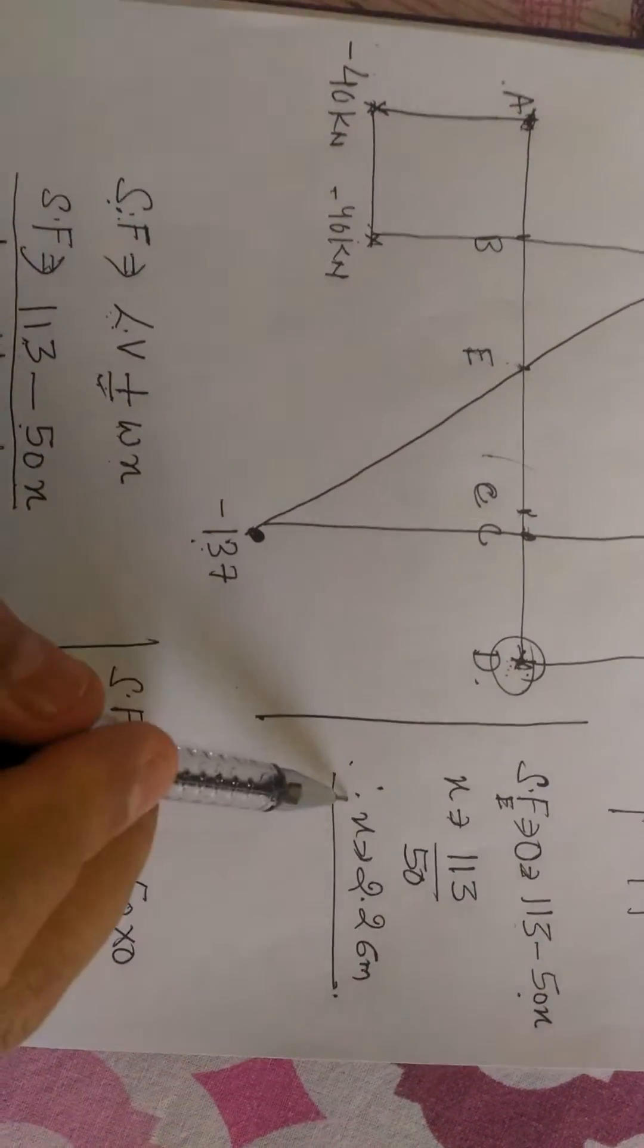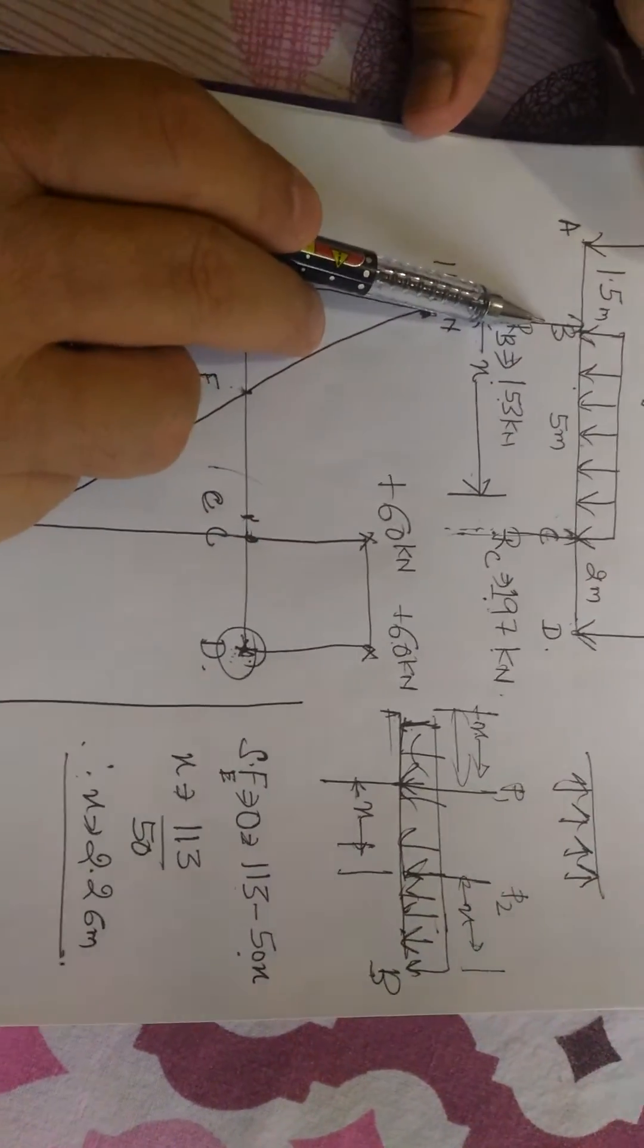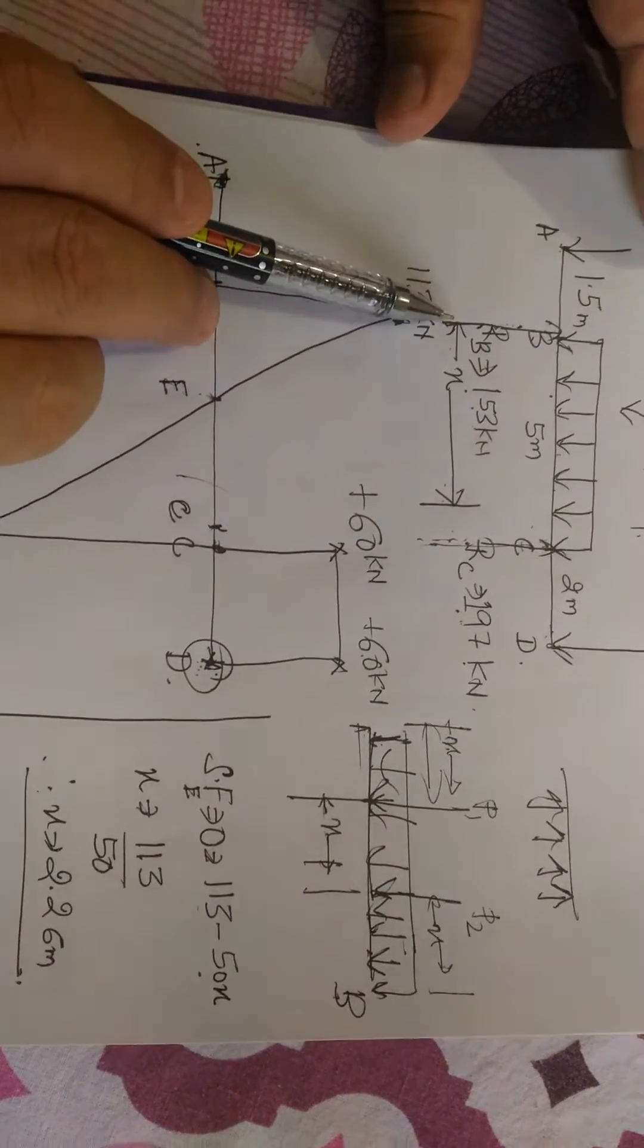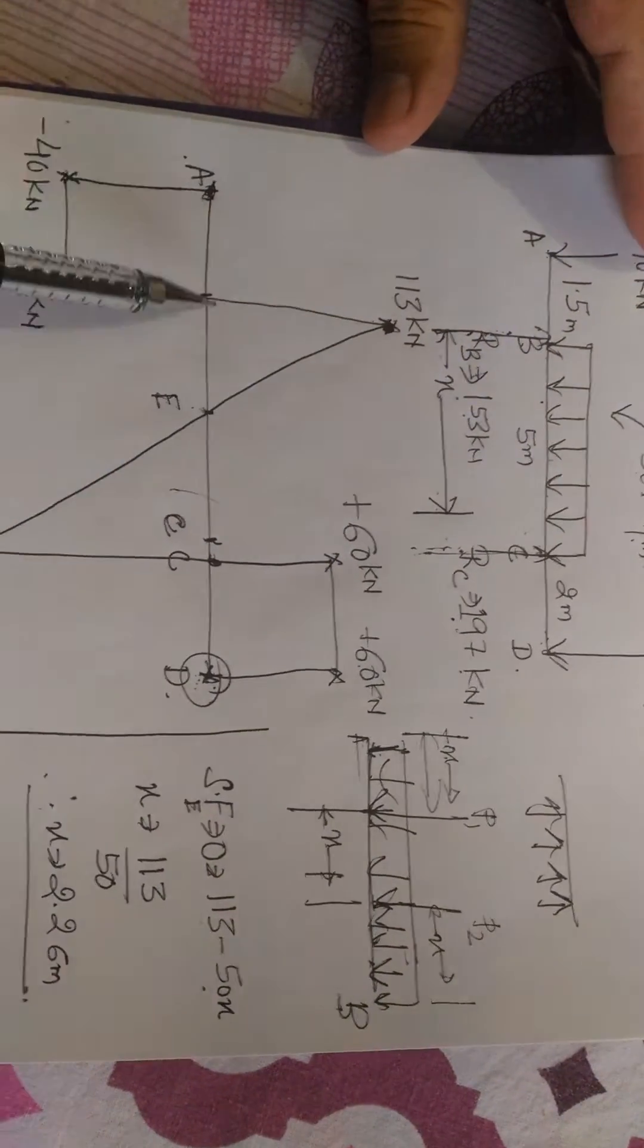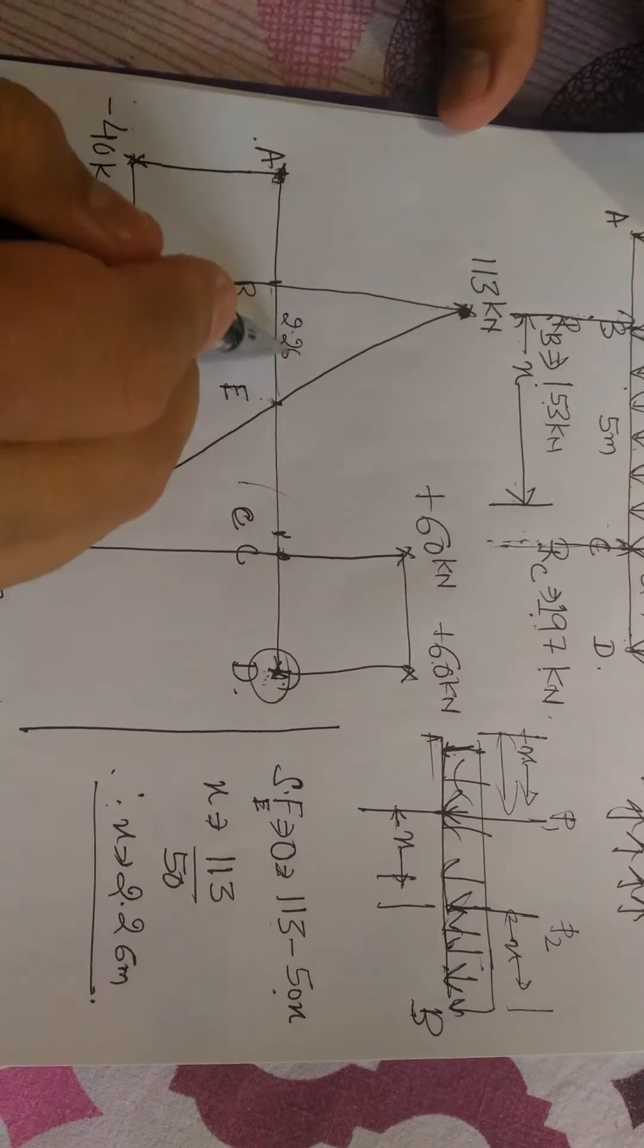Since we have considered point B to be the origin and we have measured the distance from B, this distance is 2.26 meters.